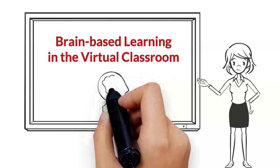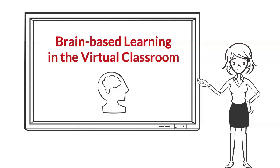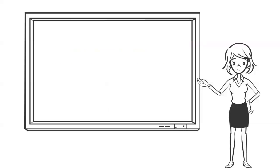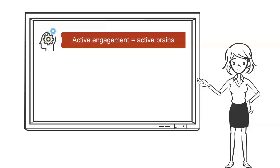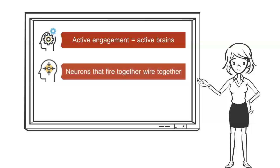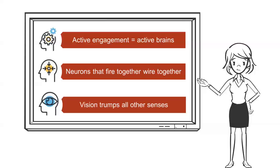There you have it. Three brain-based learning principles that will help you create virtual learning that has impact. Number one, active engagement equals active brains. Number two, neurons that fire together wire together. And number three, vision trumps all other senses.